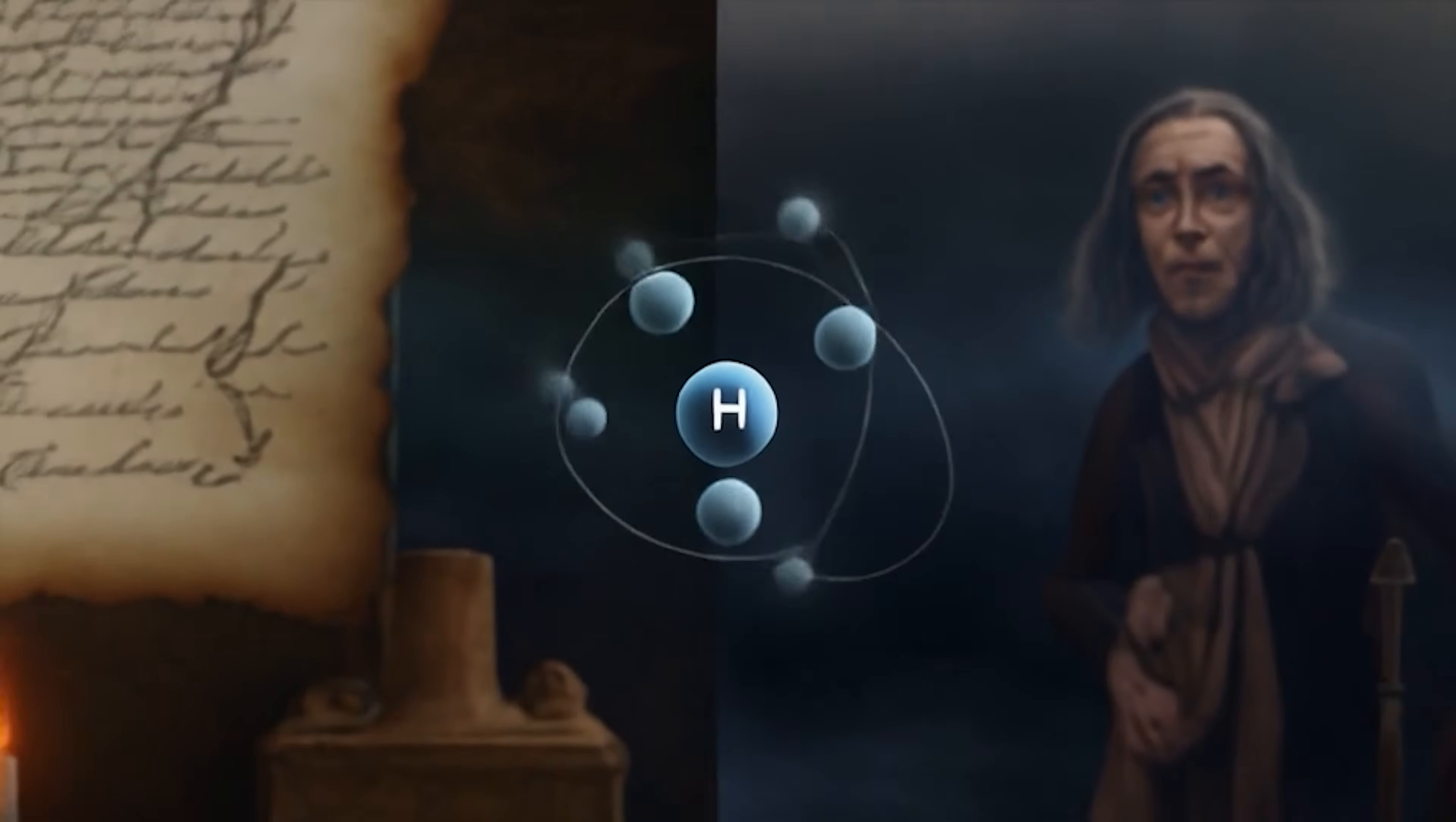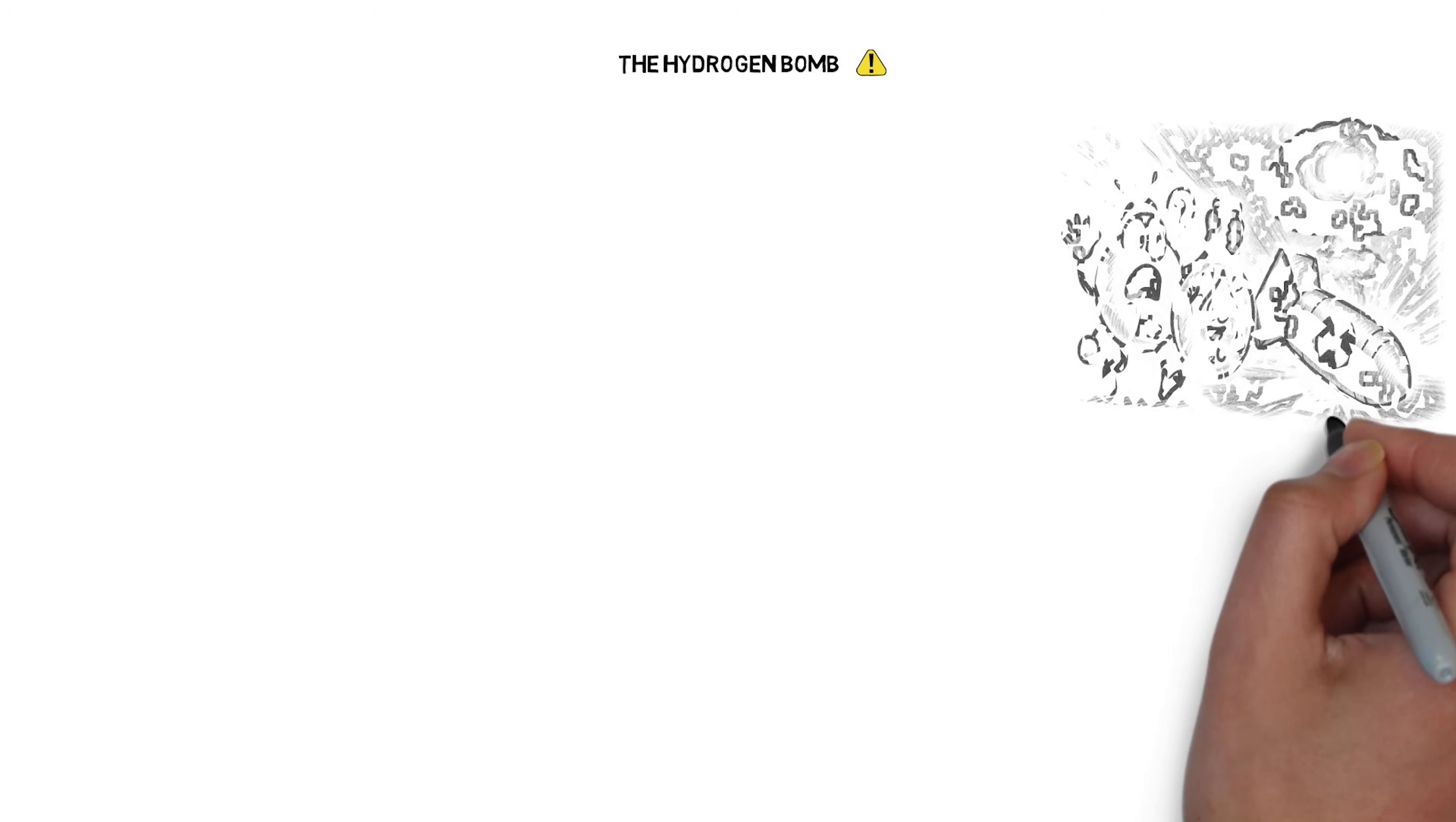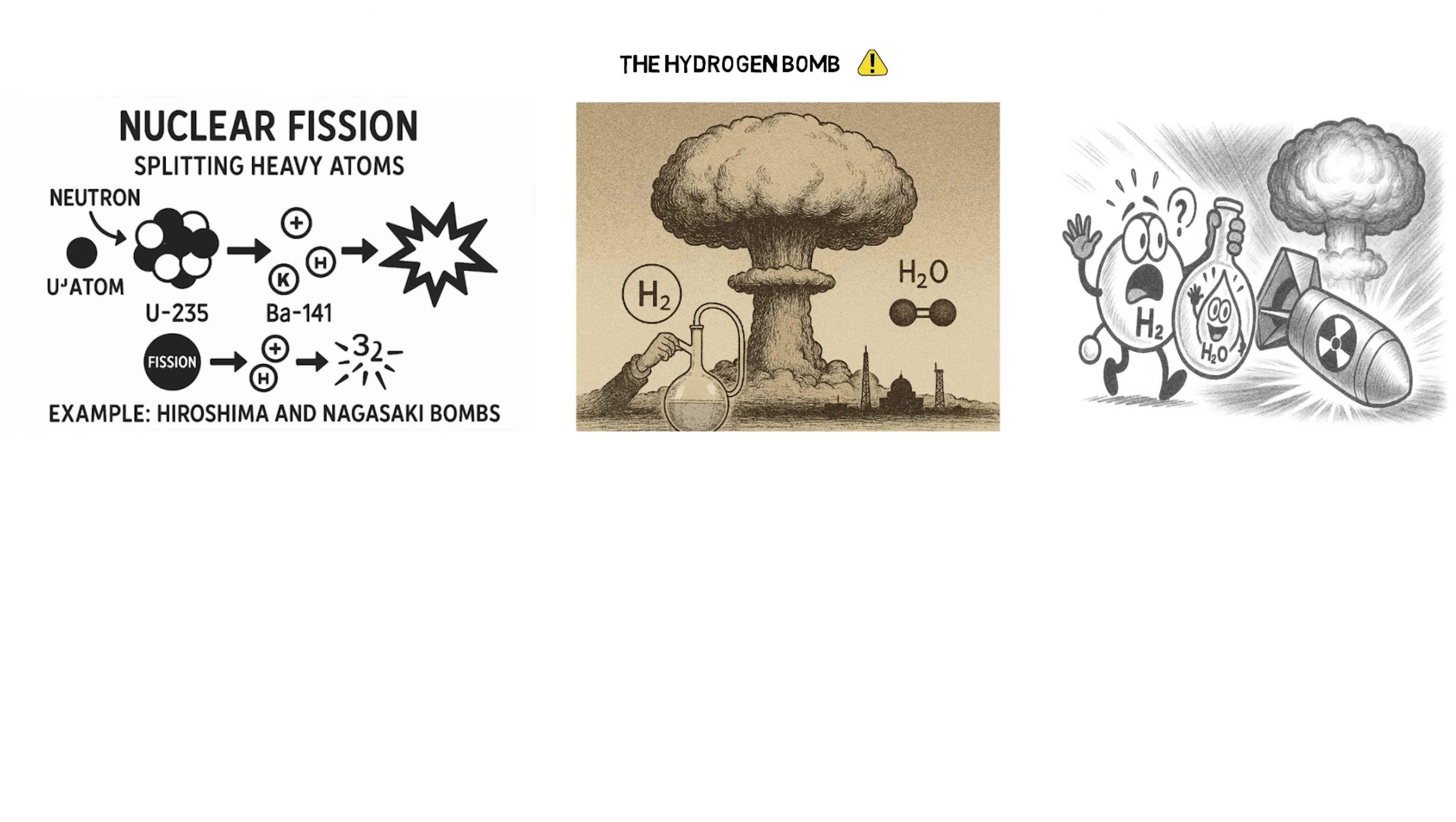But centuries later, that quiet element would be thrust into the heart of humanity's most destructive invention. In the 20th century, hydrogen's power was weaponized. Early nuclear weapons relied on fission, splitting heavy atoms like uranium or plutonium. But the hydrogen bomb introduced a second, far more devastating stage: fusion. Developed in the aftermath of World War II, the hydrogen bomb used the intense heat of a fission explosion to trigger fusion reactions between hydrogen isotopes. The result? An explosion of unimaginable scale.